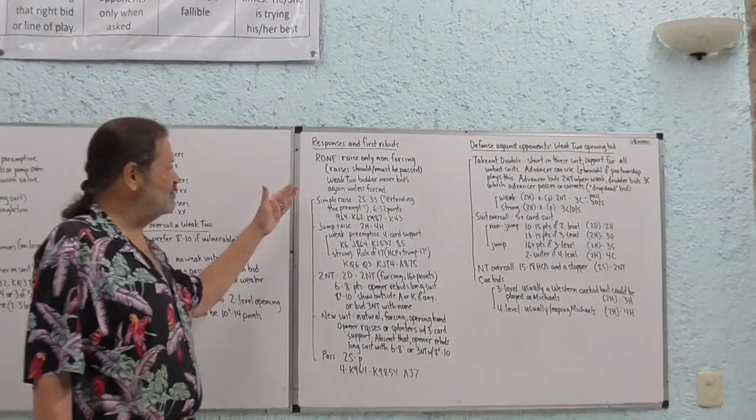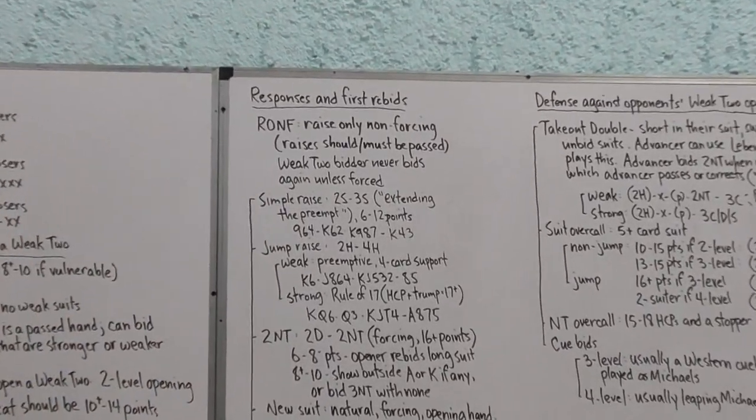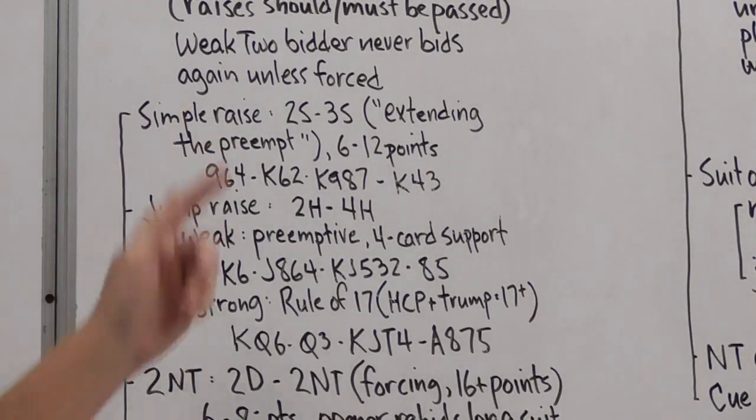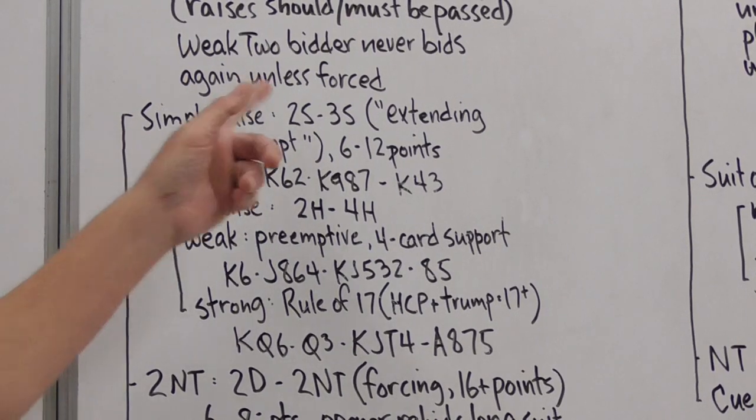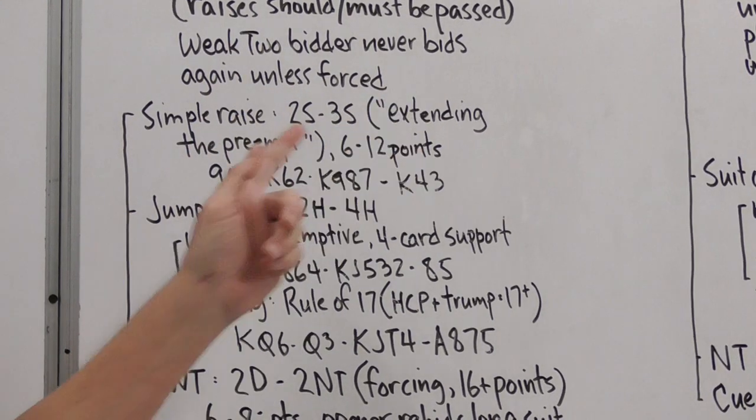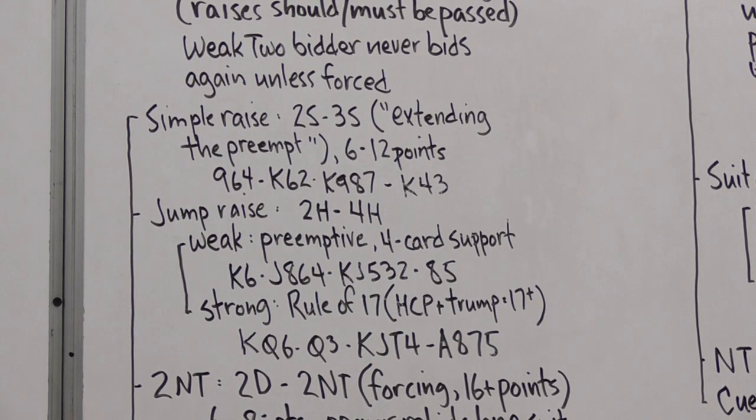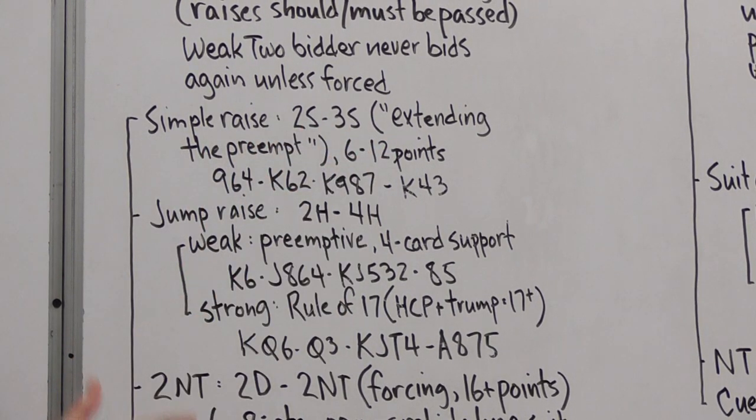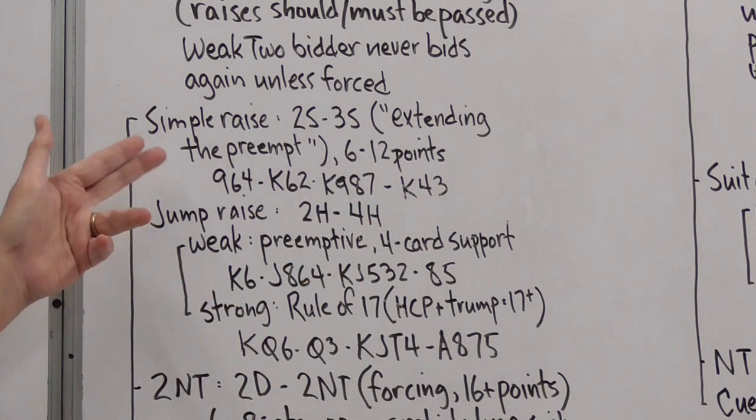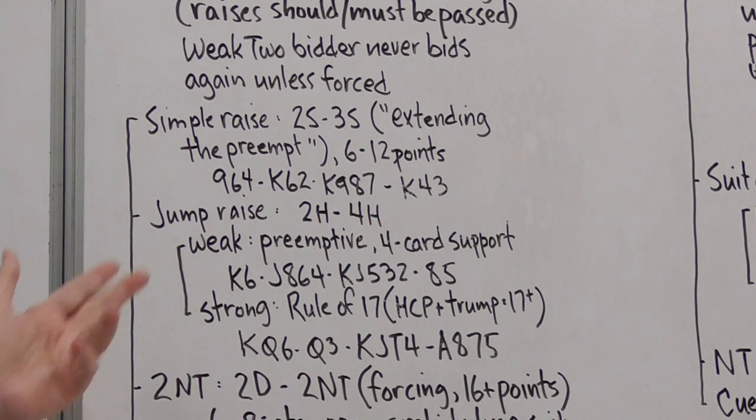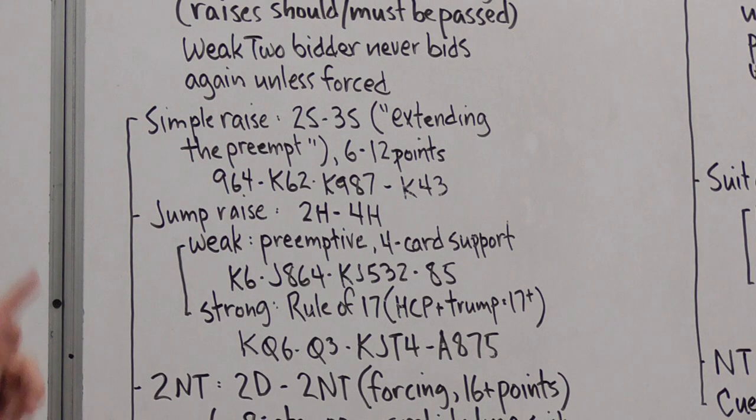Okay let's look at the options for responder. Responder can make a simple raise, say two spades, three spades and as I said we call that extending the preempt. It's basically just intended to keep the opponents out. It generally shows about six to twelve points and this might be a typical hand. Partner's made a weak two spade opening bid, you got three card support, nine high card points in the form of three kings and so you raise to three spades. Remember, partner is expected to pass that bid. It's not an invitation.